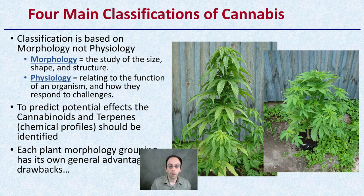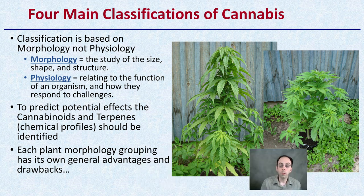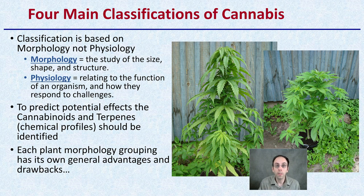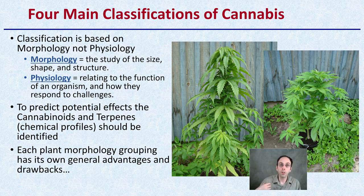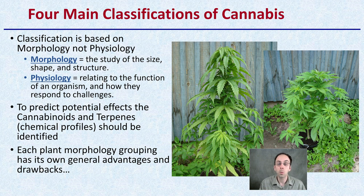When forming classifications of cannabis, remember that classification is really based more on morphology, not physiology. Morphology is the study of size, shape, and structure — how a plant physically looks, its phenotype. Physiology relates to the function of the organism and how it responds to challenges. For example, a muscle would represent morphology — whether it's skeletal or cardiac muscle — while the physiology is how that muscle actually contracts.